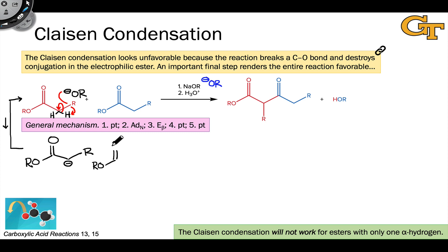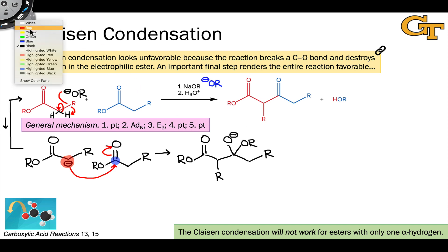In the next step, the enolate engages with the electrophilic ester in a nucleophilic addition step, the first step of nucleophilic acyl substitution. The resulting intermediate contains an anionic oxygen positioned adjacent to a carbon-oxygen bond and an alkoxy group that can serve as a leaving group. With the negatively charged oxygen adjacent to the OR group, we have the potential for beta elimination, which occurs to give a beta-ketoester.